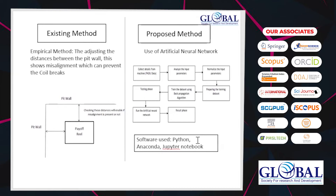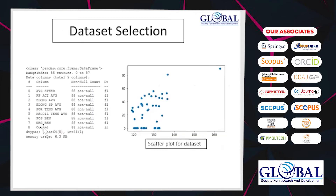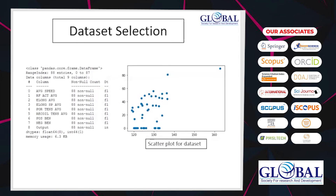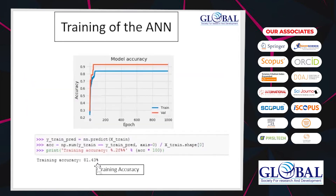For dataset selection, we take eight data sets: average speed, RF actual average, average elongation, elongation special average, entry tension average, recoil tension average, positive bending, and negative bending. We plotted a scatter plot for better understanding. In the training of the neural network, we get a graph showing accuracy with respect to the epoch count. We achieved an accuracy of 81.43%, which is considered low, so we worked to increase accuracy further.